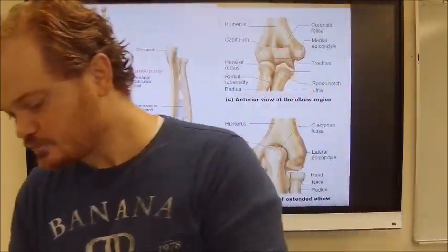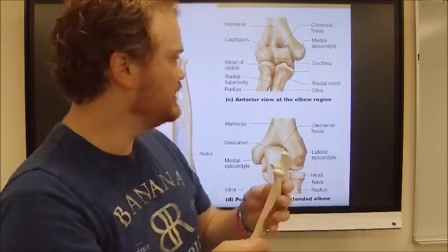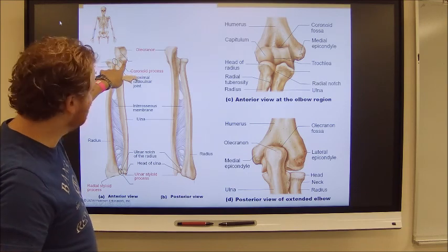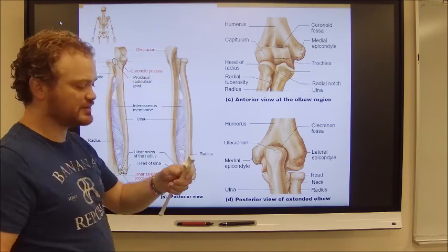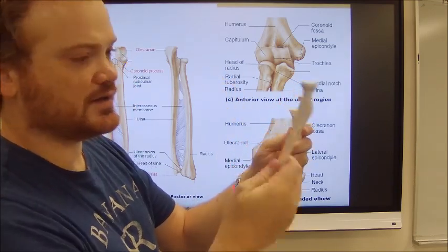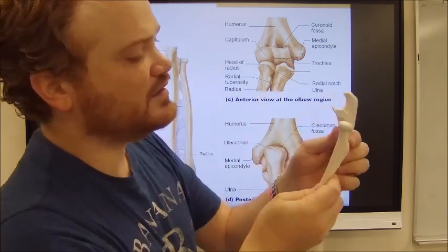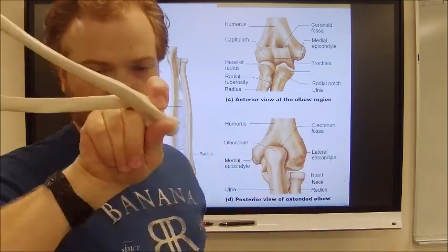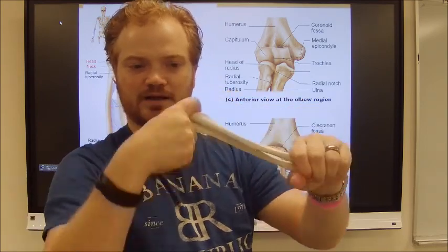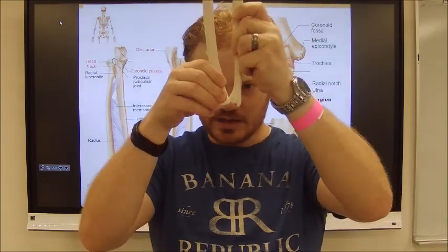Here are the radius and ulna. On the ulna there's a coronoid process and an olecranon process. The round end of the radius fits into a smooth spot beside the ulna, with a thick band of connective tissue wrapping around it — forming a pivot joint that allows the two bones to twist so your hand can rotate. At the other end, a round bottom of the ulna and an indentation at the bottom of the radius also fit together to allow that twisting rotation.